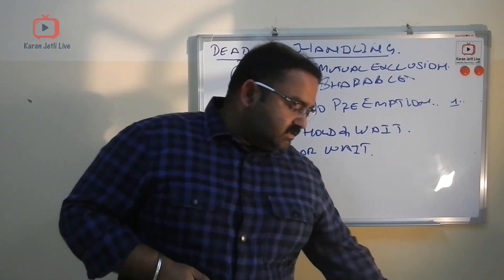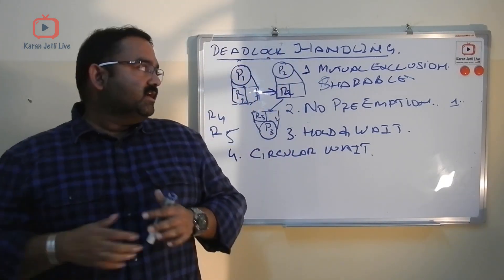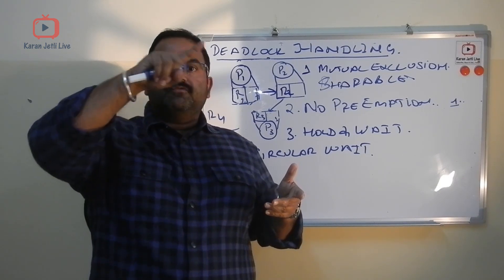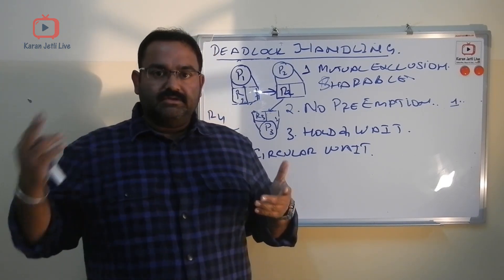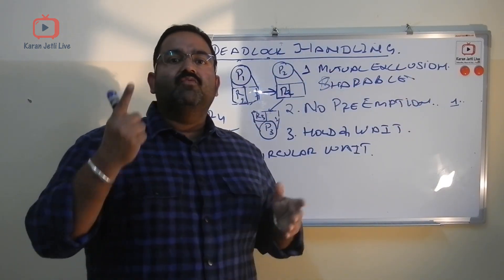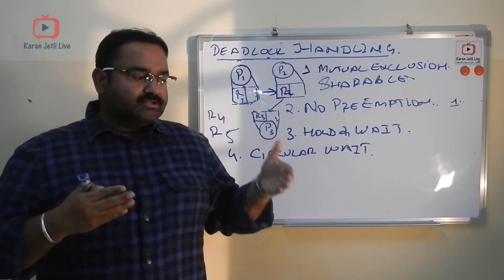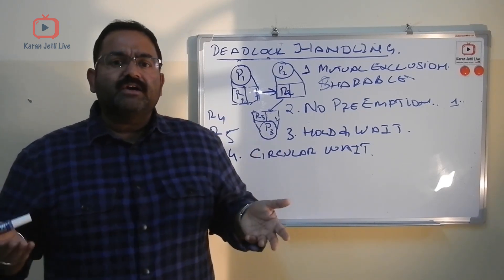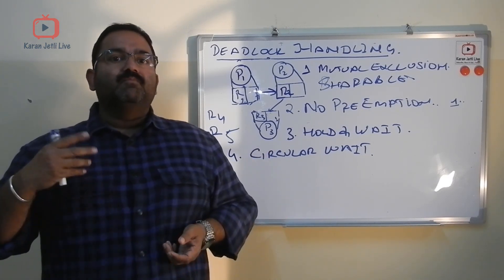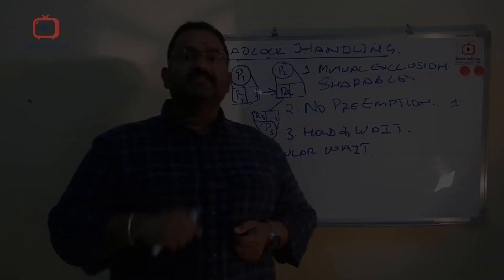So that's all on deadlock handling. Deadlocks are handled in two steps: deadlock detection and deadlock prevention. To detect a deadlock, look for a cycle in the resource allocation graph. To prevent a deadlock, break any one of the four conditions — mutual exclusion, no preemption, hold and wait, or circular wait — and the deadlock will be broken. I hope you understood and enjoyed the video. Please leave feedback in the comments and subscribe for more IT-related videos.